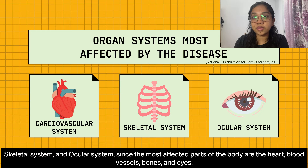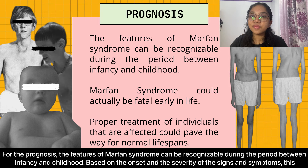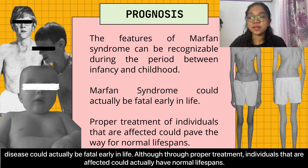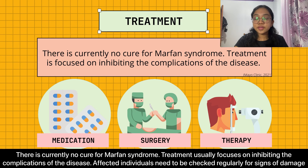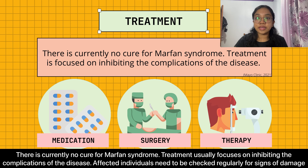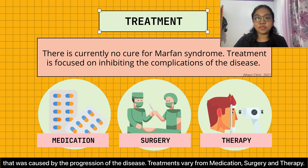For the prognosis, the features of Marfan Syndrome can be recognizable during the period between infancy and childhood. Based on the onset and severity of the signs and symptoms, this disease could actually be fatal early in life. Although, through proper treatment, affected individuals could actually have normal life spans. There is currently no cure for Marfan Syndrome. Treatment usually focuses on inhibiting the complications of the disease, and affected individuals need to be checked regularly for signs of damage caused by the progression of the disease.